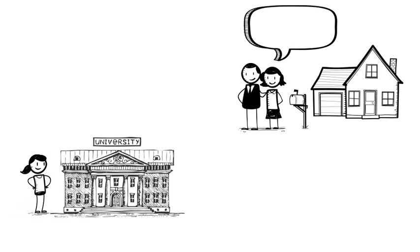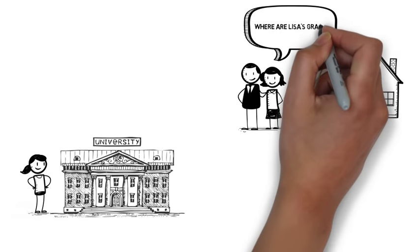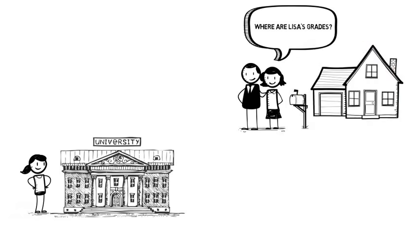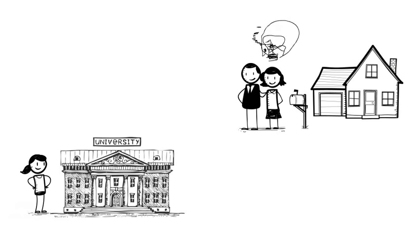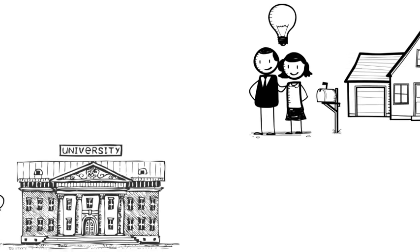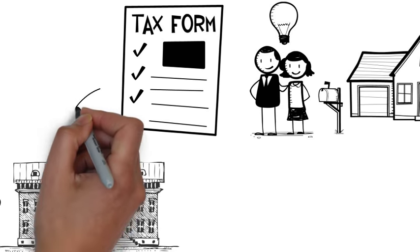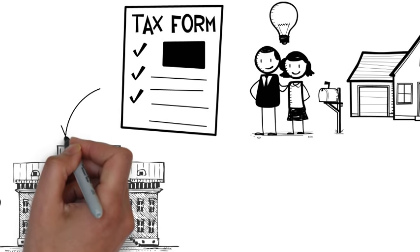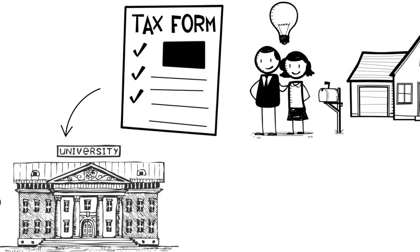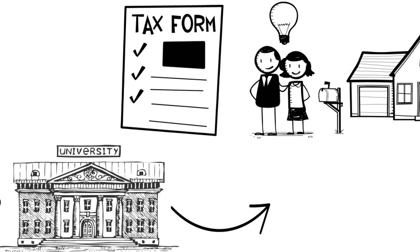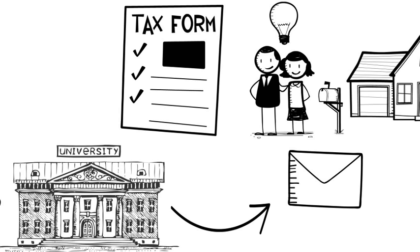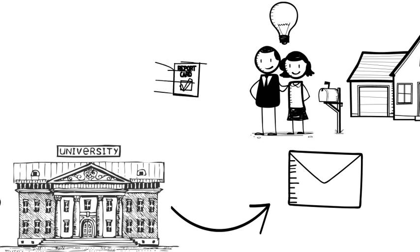Her parents wonder, but wait a minute — I'm paying the bills here, and now I can't see how she's doing academically? Since Lisa's parents claim her as a dependent on their federal tax return, her parents can still see her education records if Lisa's college chooses to release them. FERPA doesn't require schools to release records; it only allows this.